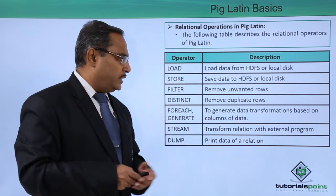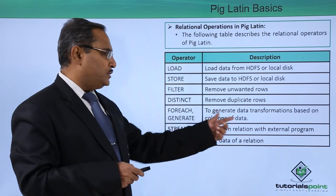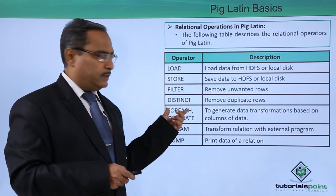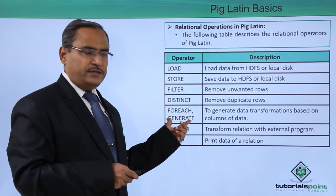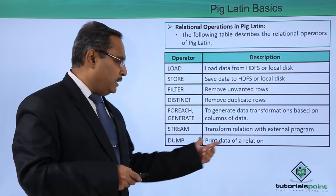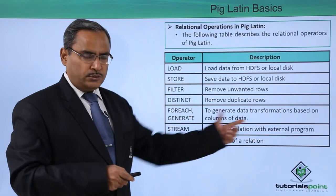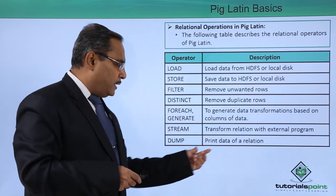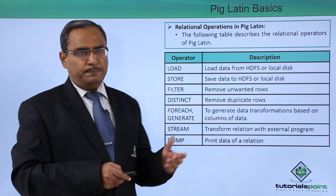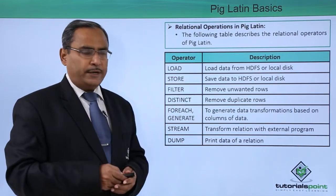We have FOREACH GENERATE, which generates data transformations based on columns of data. We have STREAM, which transforms relations with external programs. We have DUMP, which prints data for a relation. These are the respective operators.